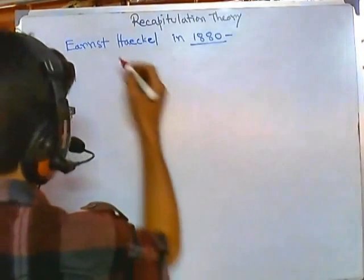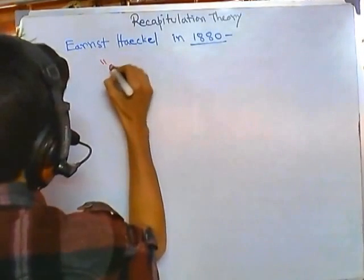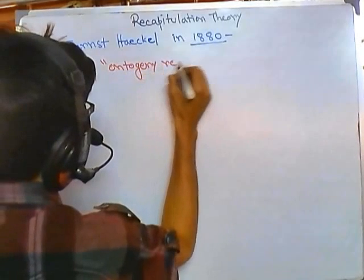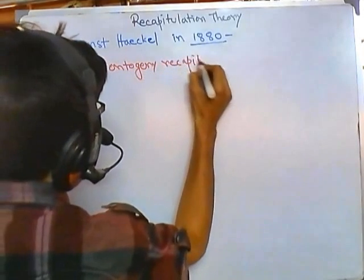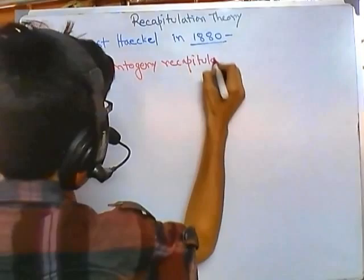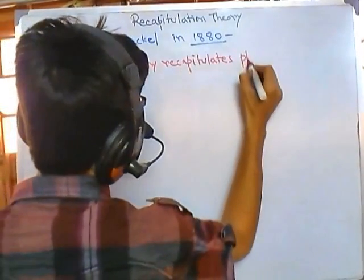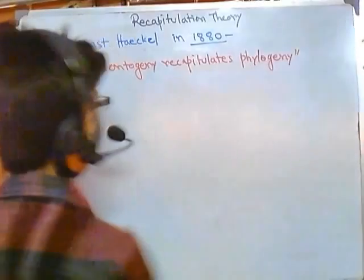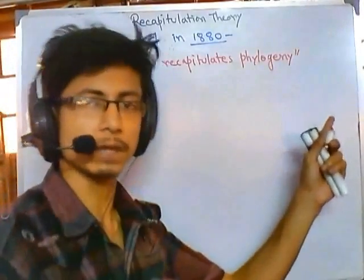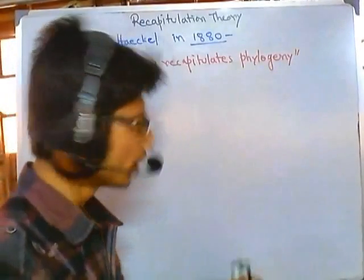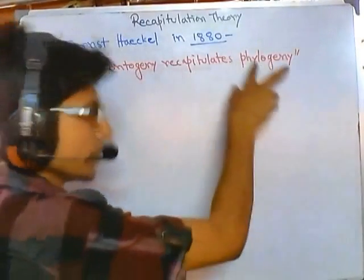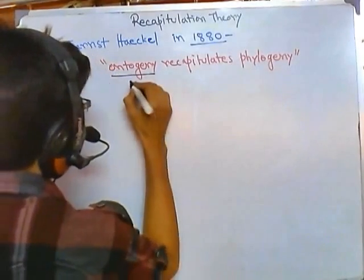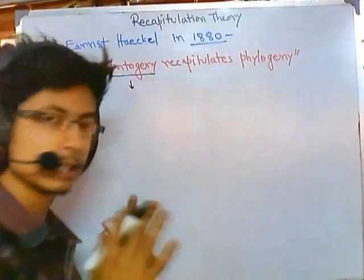According to this theory or hypothesis, he stated that ontogeny recapitulates phylogeny, or ontogeny repeats phylogeny. So what do we mean by ontogeny recapitulates phylogeny?